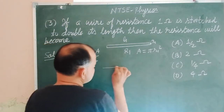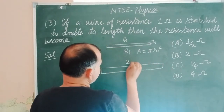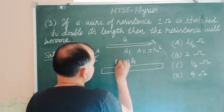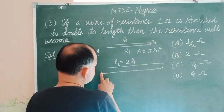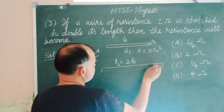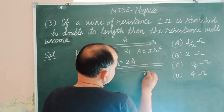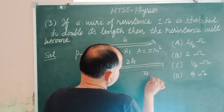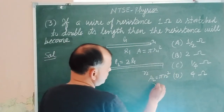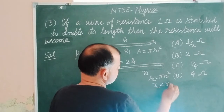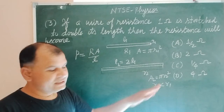If we stress this wire making its length double, the new length is 2L1. Let the new resistance be R2. The radius also changes — radius becomes smaller when we stress the wire, because when we stretch the wire the length becomes more but its radius decreases.